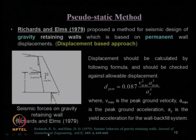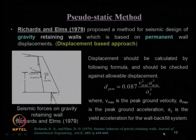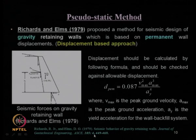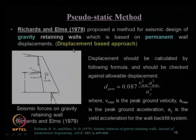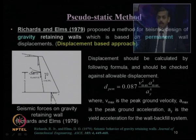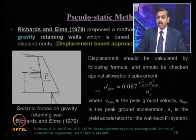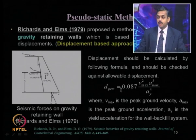The Richard and Elms (1979) paper, 'Seismic Behavior of Gravity Retaining Walls', published in the Journal of Geotechnical Engineering of ASCE, Volume 105, Issue 4, proposed that in addition to computing active earth pressure PAE under earthquake condition using the pseudo-static approach, it can also be checked with respect to the permissible displacement of the wall.